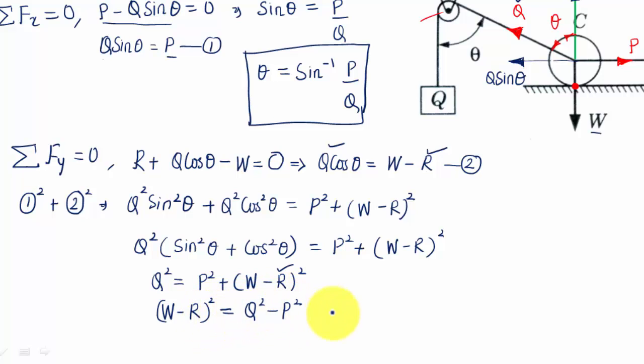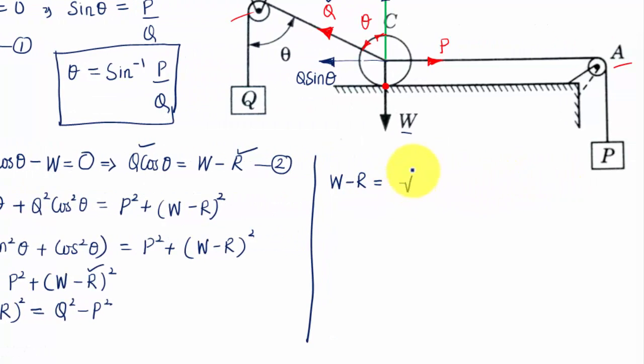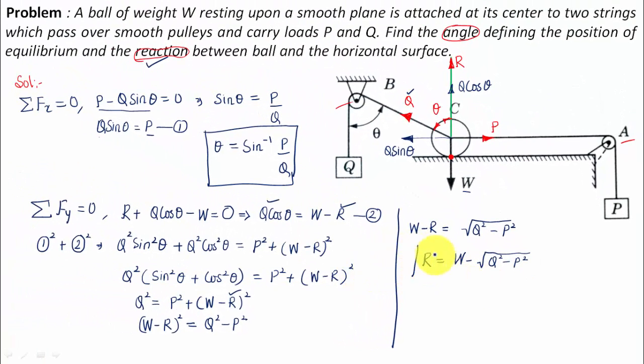What we're going to be doing is W minus R whole square equals Q square minus P square. I want to remove this square sign, so W minus R is equal to root over Q square minus P square. You can get the value of R: R will be equal to W minus root over Q square minus P square. This is the value of the reaction at this particular point.